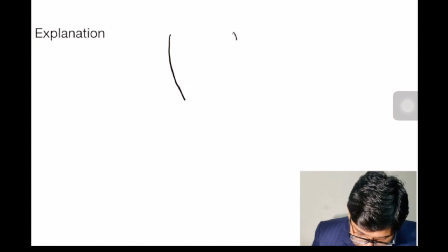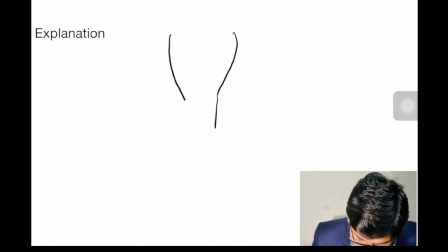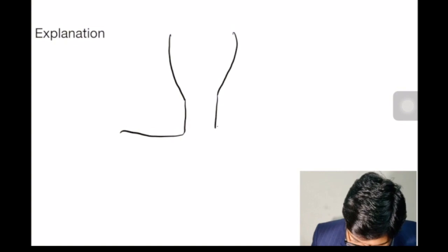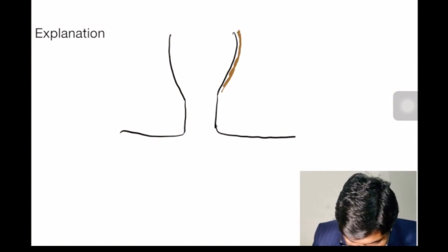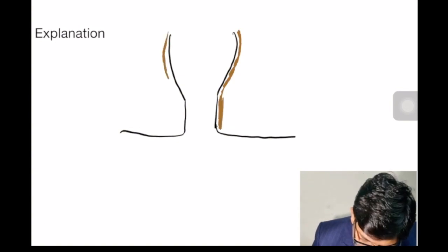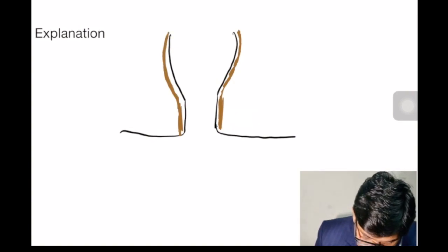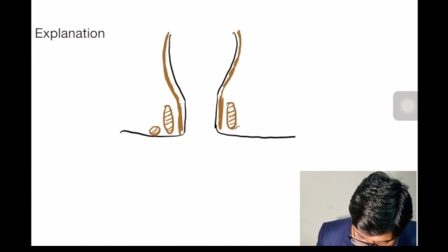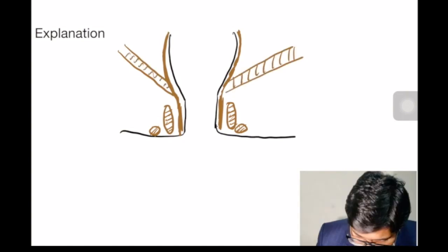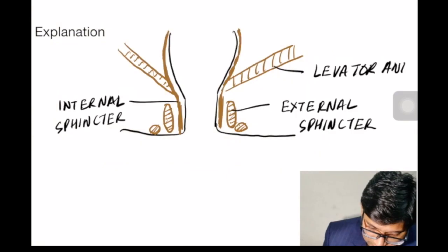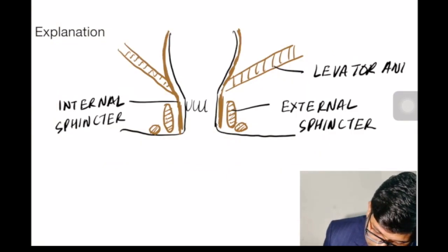This is the rectum which forms the anal canal below, and below this is the skin. The thickened part of the circular muscle layer of the rectum forms the internal sphincter on both sides. This is the internal sphincter, this is the external sphincter — the subcutaneous part of the external sphincter — and this muscle is the levator ani. Here lies the anorectal ring.